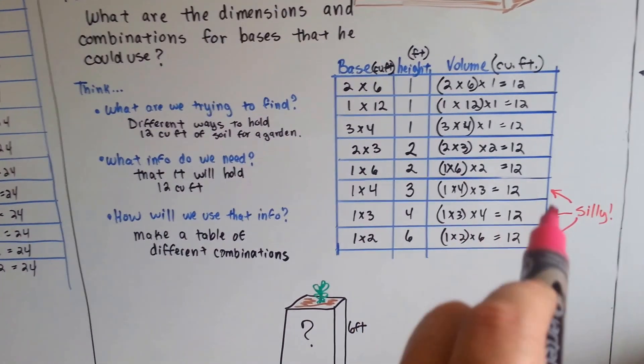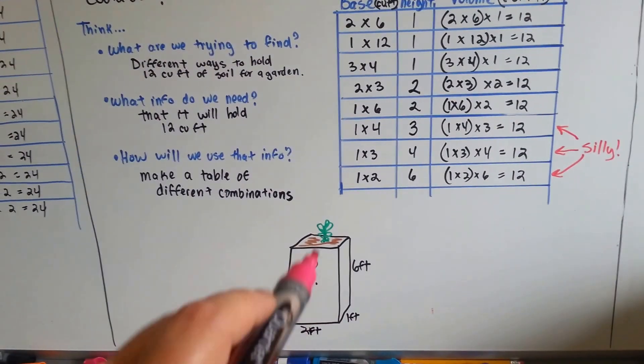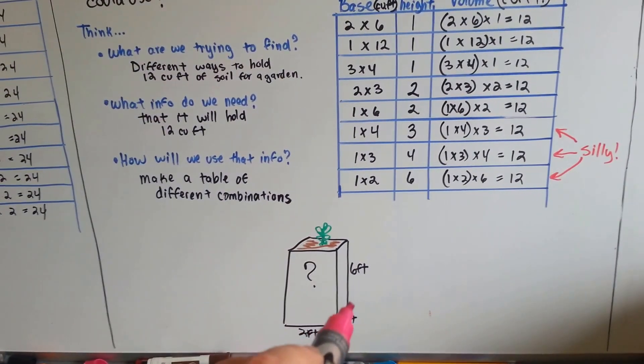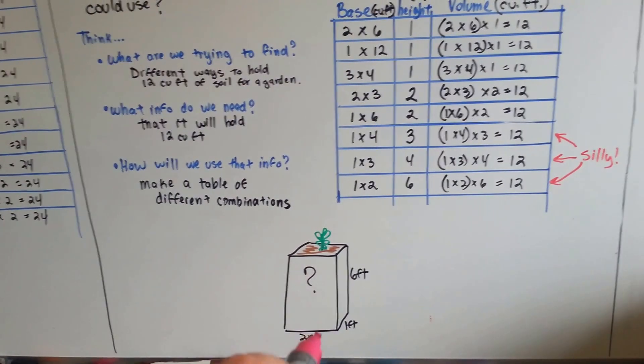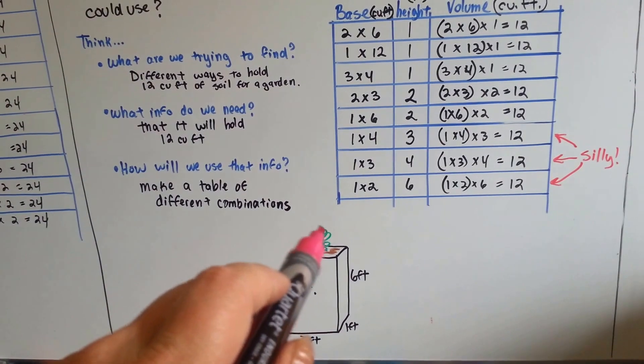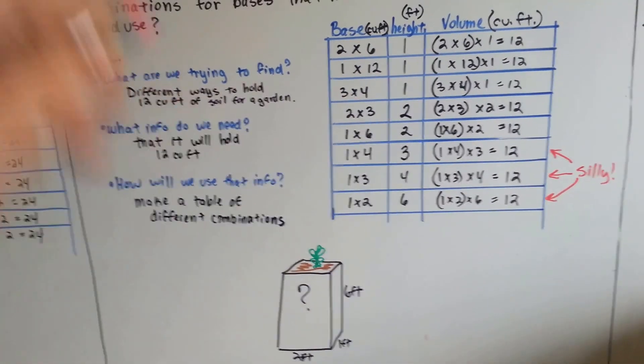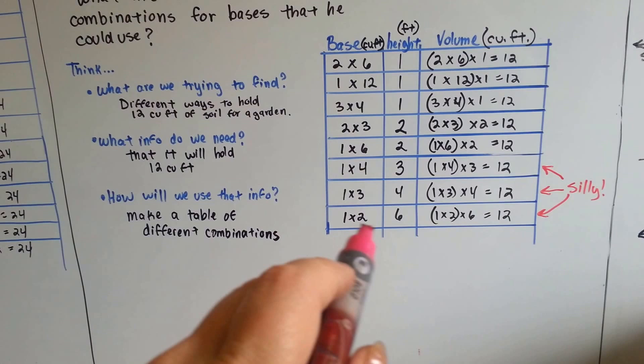Look at this one. These would be silly. Can you imagine a garden six feet tall and one foot by two foot? Six feet is like the height of a door. Can you imagine trying to reach to pull your tomatoes off the plant if your garden was as tall as a door? That would be silly.